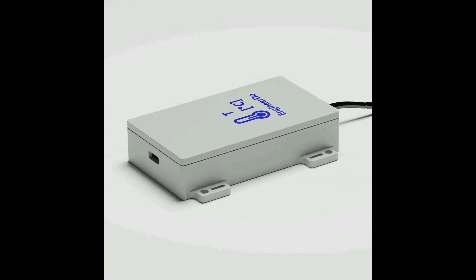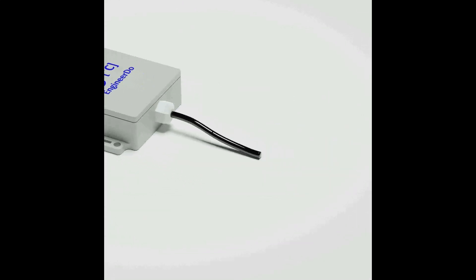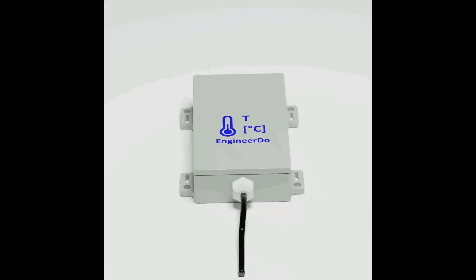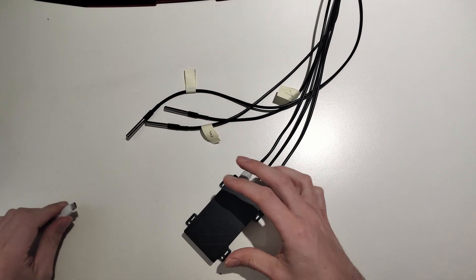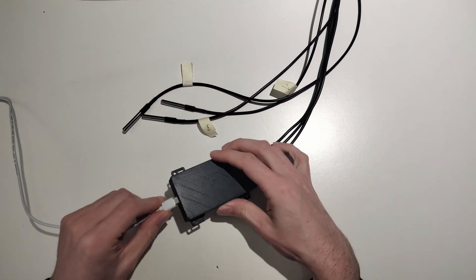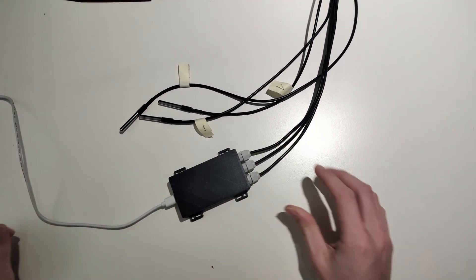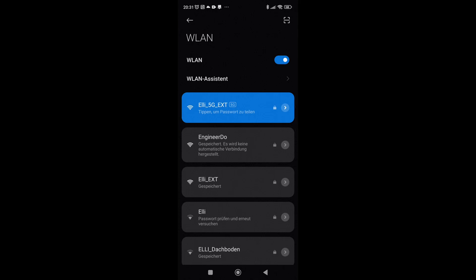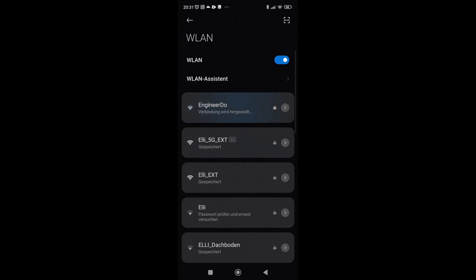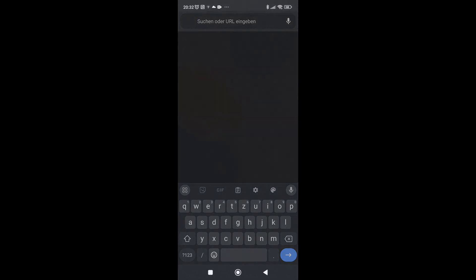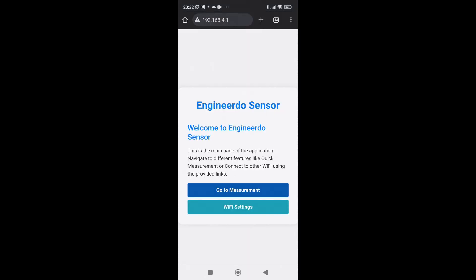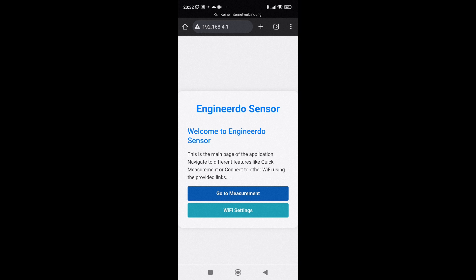The system is designed to be modular and user-friendly, making it accessible to researchers and engineers. To start the measurement, I simply connect the measuring box with a USB cable for power supply. Then I log into the Wi-Fi that the sensor box provides, where I can directly start a measurement or alternatively connect it to my home Wi-Fi from where I can log into the measurement device and start the measurement, for example from my desktop PC.